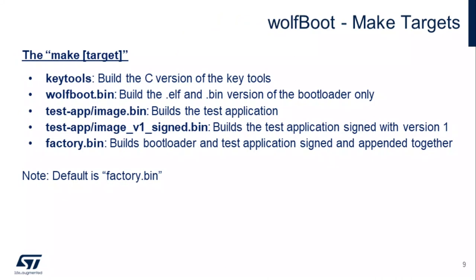After you've done the config, you basically just run make and it will build everything. It won't build the key tools automatically — you should run make key tools to build the C version. Otherwise it'll try to use the WolfCrypt Python version of the signing and keygen tools, which is fine if you've installed it. A normal make will build WolfBoot, build a test application, sign it, and assemble all that into what we call a factory bin, which you can flash altogether onto the onboard flash as a test.